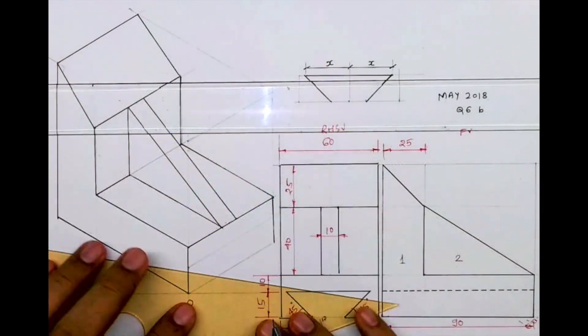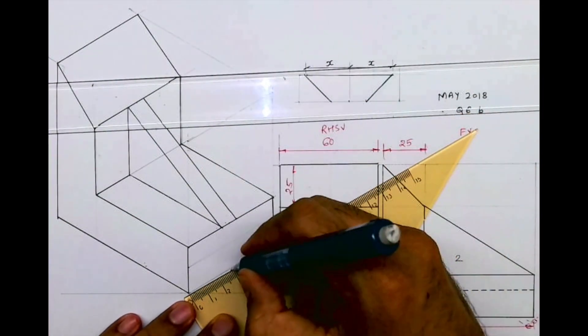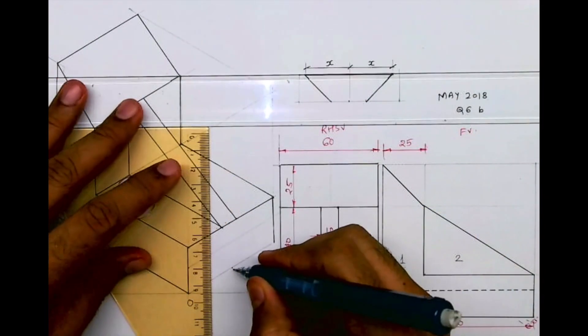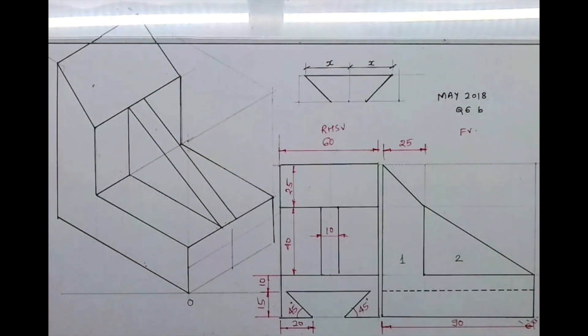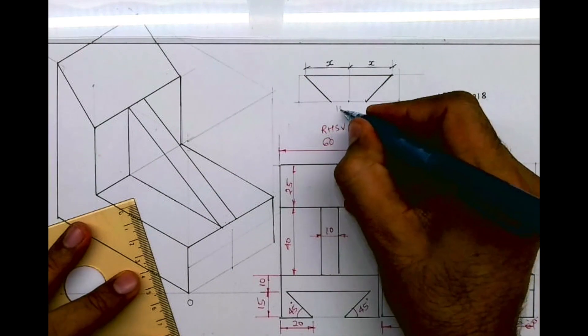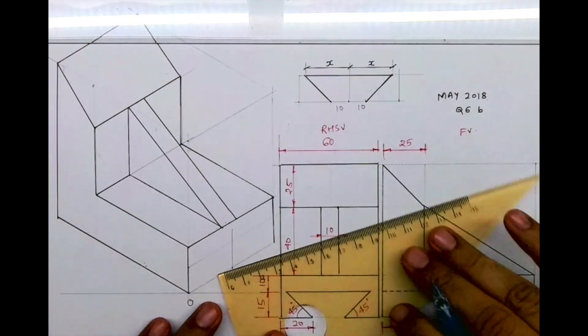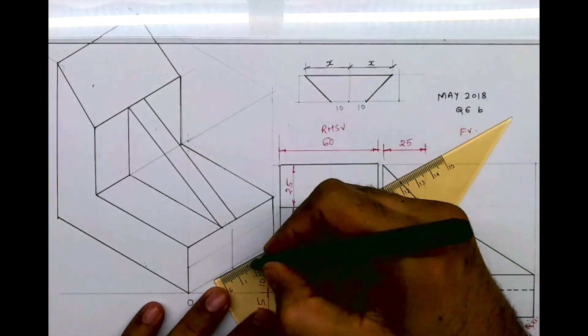Now we'll draw a line of 15, will mark the midpoint, and then we'll take 10, 10 on both the sides. We'll draw vertical lines. Let's take this as 10, 10. This is 10, 10. So we'll mark 10, 10 on both the sides. This much will be dark.